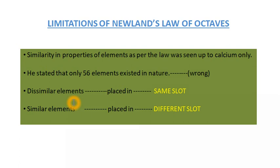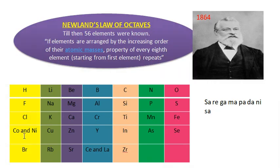The third limitation was that dissimilar elements were placed in the same slot. In order to fit elements into his table, Newland put even two elements together in one slot, and placed them in the column of unlike elements having very different properties. For example, cobalt and nickel were put together in one slot and placed in the column of chlorine and bromine, which have very different properties from cobalt and nickel.